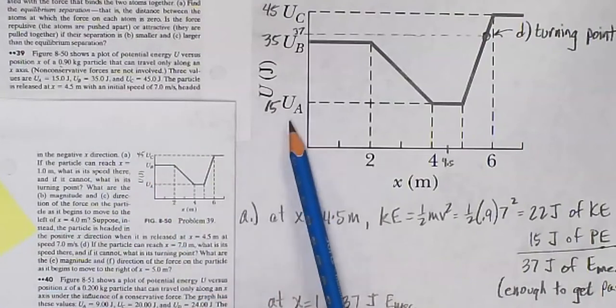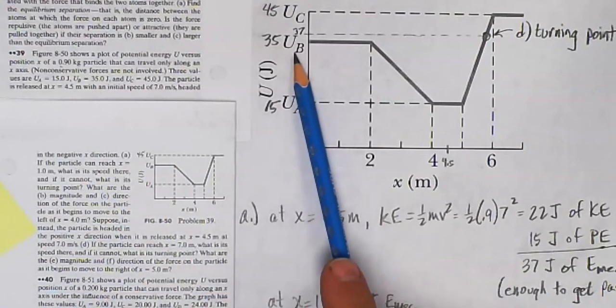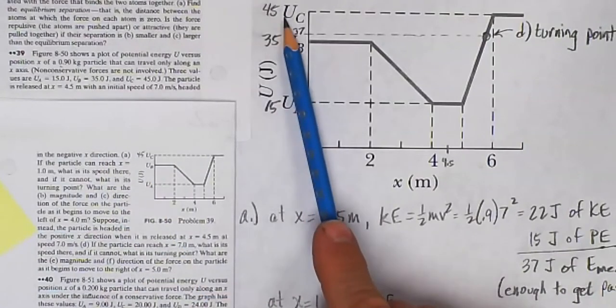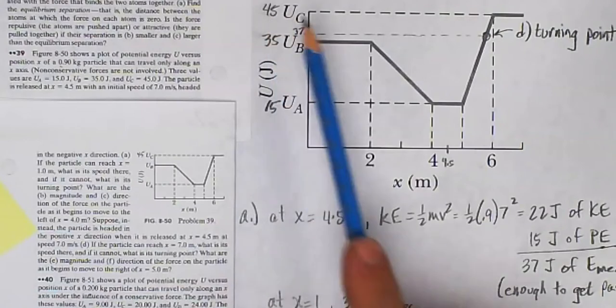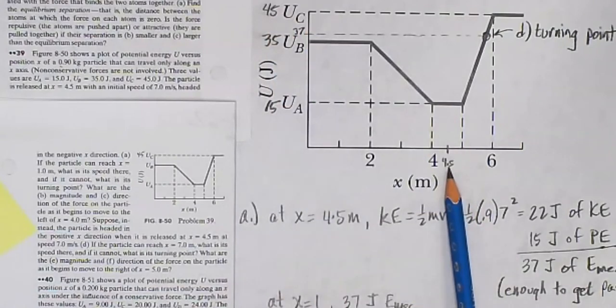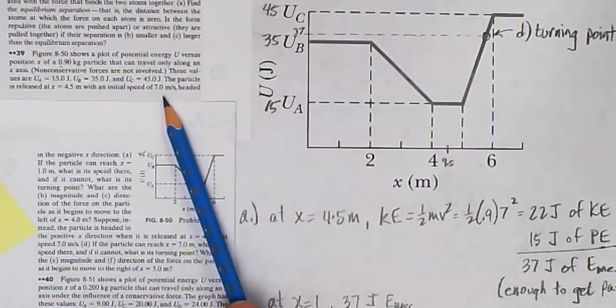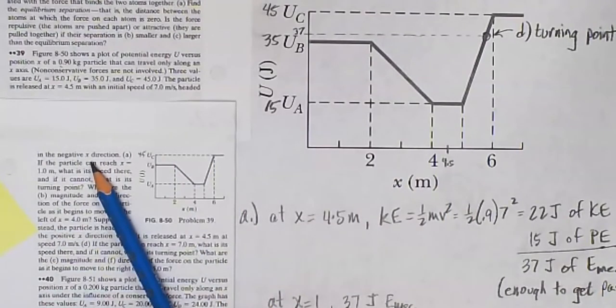The values of UA are 15 joules, UB is 35 joules, and UC is 45 joules. The particle is released at x equals 4.5 meters with an initial speed of 7 meters per second headed in the negative x direction.